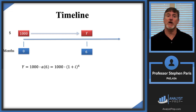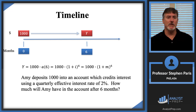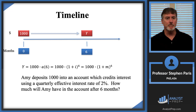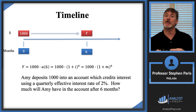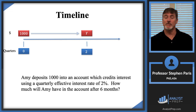Since we're accumulating for six months, the i in that expression should be a monthly effective interest rate — let's call it i_M. But the problem gives us a quarterly effective interest rate, not a monthly one. So let's change the timeline units from months to quarters. Six months later becomes two quarters later, and we have accumulated value Y at time two quarters.